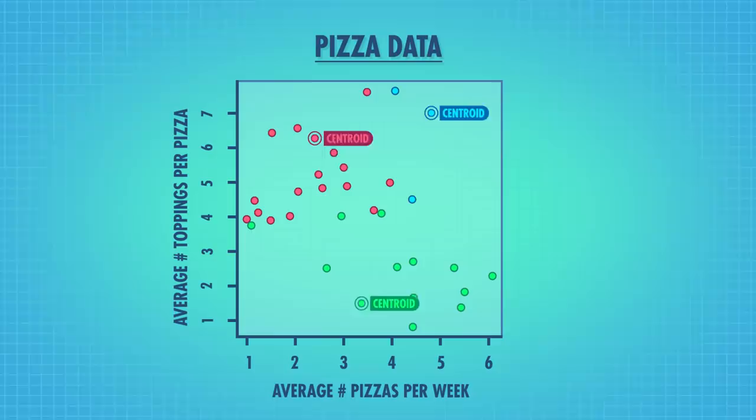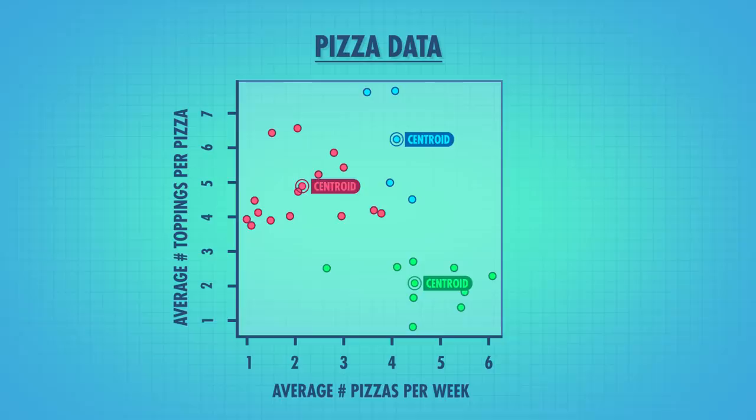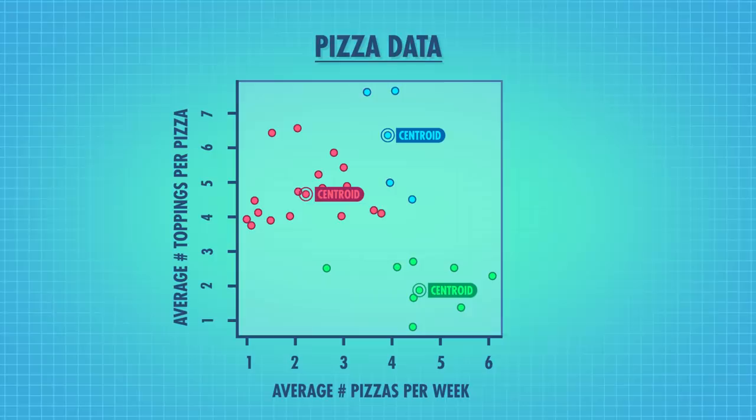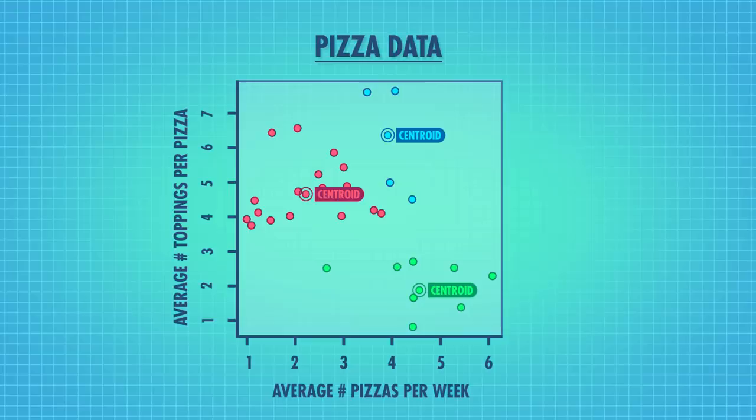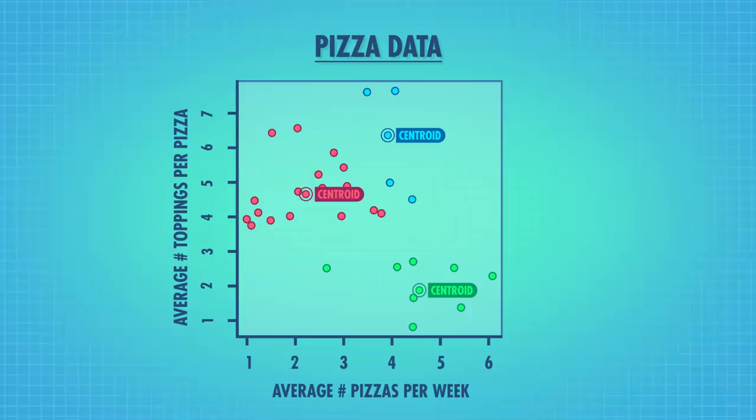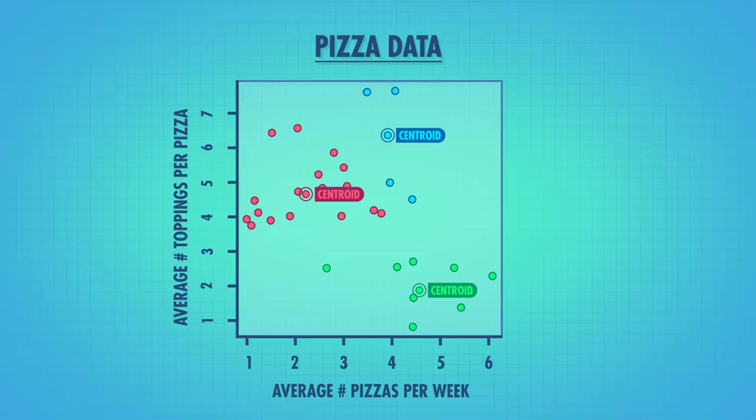Now that each group has some members, we calculate the current centroid for each group. And now that we have the new centroids, we repeat this process of assigning every point to the closest centroid and then recalculating the new centroids. The computer will do this over and over until the centroids converge — meaning the centroids and groups stop changing even as we keep repeating the steps. Once it converges, we have our three groups, or clusters.